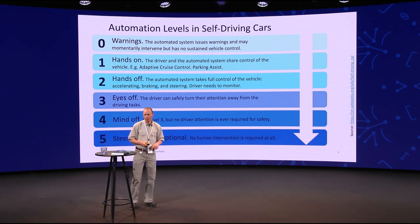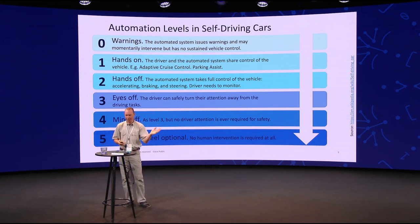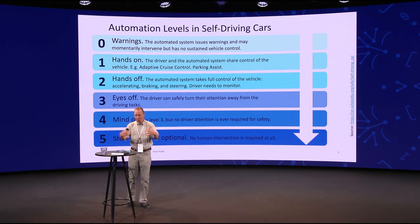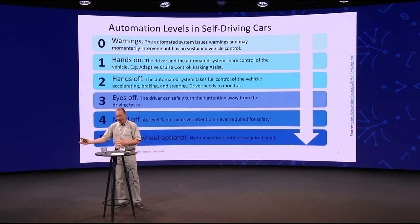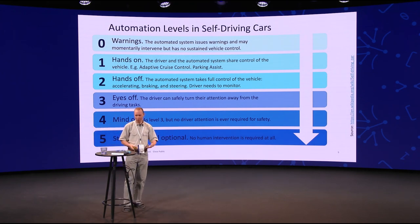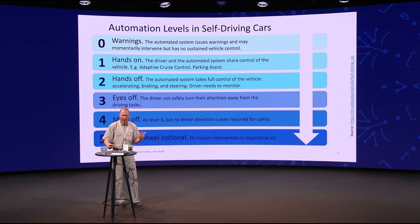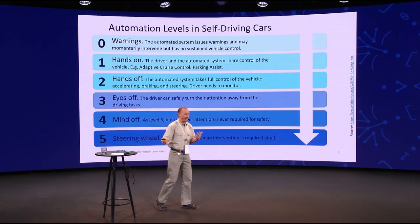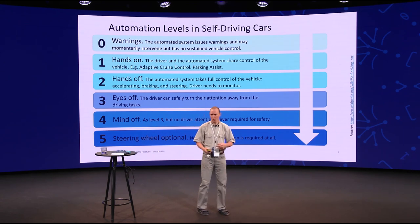On level four, you can basically take a nap in the car. If a situation arises where the car cannot handle it on its own — for example, you're leaving the map area, or it's too slippery — it will park the car until you wake up. And on level five, you don't need the steering wheel anymore. By having terminology like this, it's easier to have a conversation about what sort of automation we are talking about.